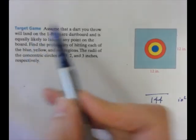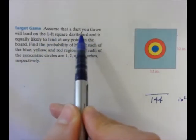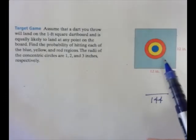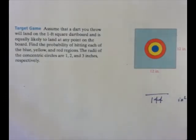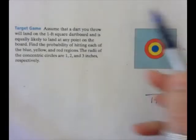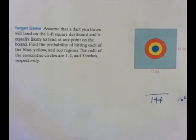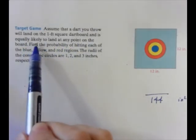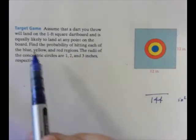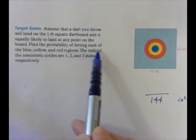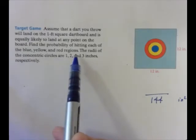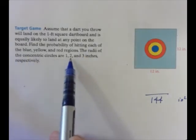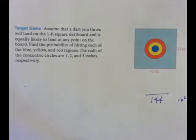Now, if I read this question, we're going to assume that a dart you throw will land somewhere on here. That's what we have to assume. We have to assume for everything that we do that it doesn't ever land outside the shape, that it's always going to land inside the shape. And it's equally likely to land at any point on the board. You're going to find the probability of hitting each of the blue, yellow, and red regions. The radii of the concentric circles are 1, 2, and 3 inches, respectively.